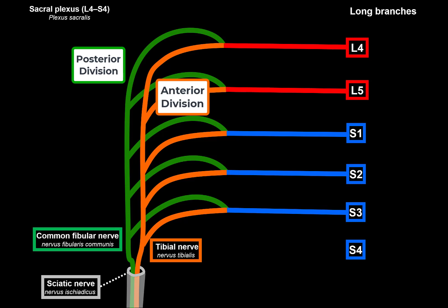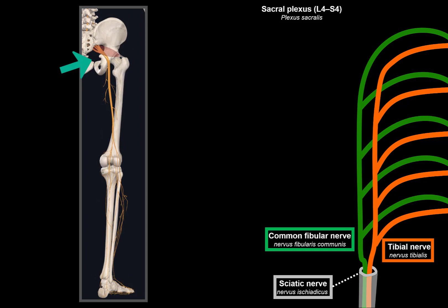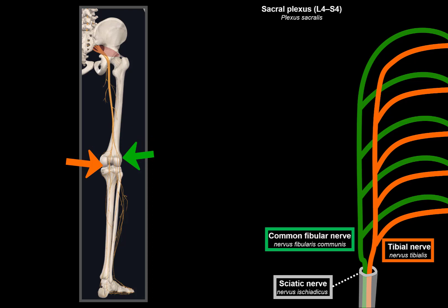Together they form the sciatic nerve, the largest nerve in the body — about two centimeters in diameter. The sciatic nerve passes through the greater sciatic foramen below the piriformis muscle, then between the posterior thigh muscles, descending toward the popliteal fossa at the posterior knee. There it splits into two main branches: the tibial nerve (anterior division) and the common fibular nerve (posterior division).